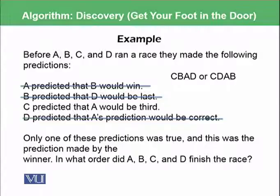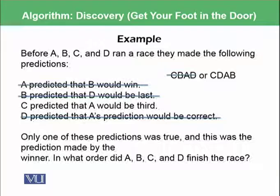Here you need to refer to the problem again. B predicted that D would be lost - the second statement. As this is a wrong statement, this was false, this was rejected previously. This means the first option can be ruled out that D is the last one.